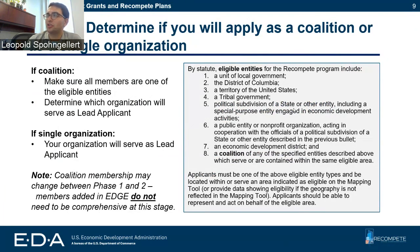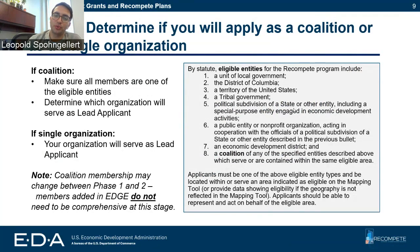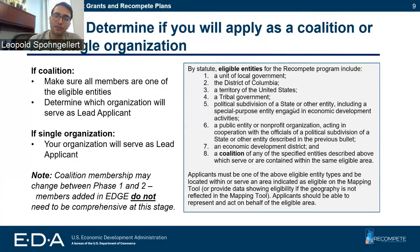There are seven eligible entities for this program, and you must determine which organization will serve as lead applicant, which is very important when we get into EDGE. If you are a single organization, make sure you're an eligible entity, and it's important to know that you are the lead applicant. For those thinking about forming a coalition, we understand that your coalition membership may change between Phase 1 and 2, so please don't stress out about getting every single member into EDGE. We really just need the lead applicant there, but it is helpful if you can add your coalition.